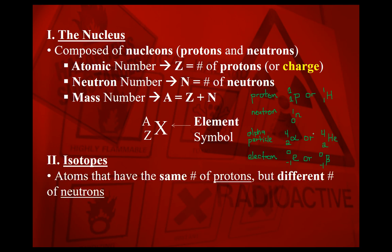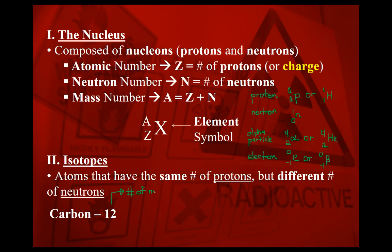Isotopes are atoms that have the same number of protons but a different number of neutrons. In isotope notation, you write the element name, then a hyphen, and after the hyphen the number indicates your number of nucleons — that is, protons plus neutrons.